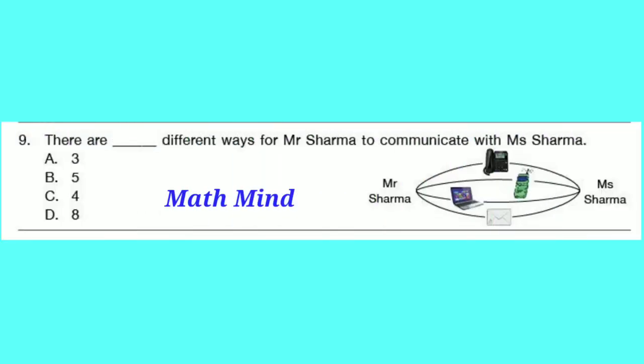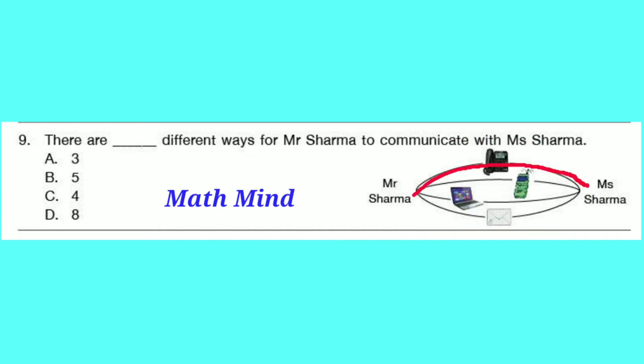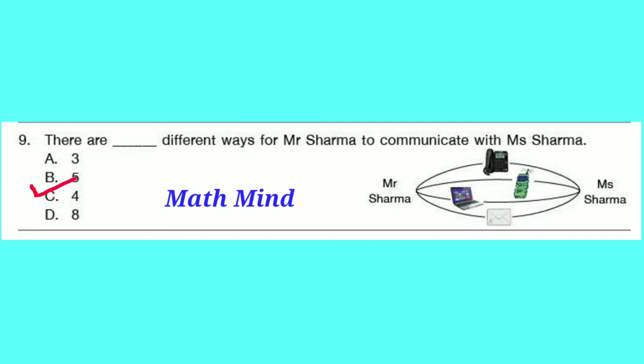Question number 9: There are how many different ways for Mr. Sharma to communicate with Mrs. Sharma? Way 1: Telephone. Way 2: By mobile. Way 3: By laptop. Way 4: By email. So the correct option is C — 4.